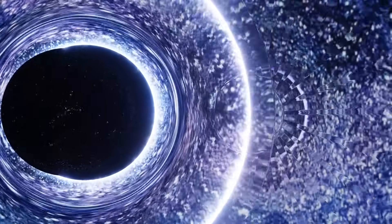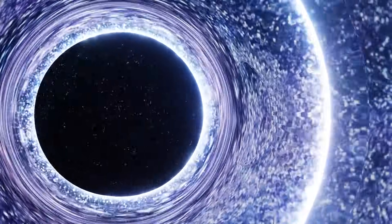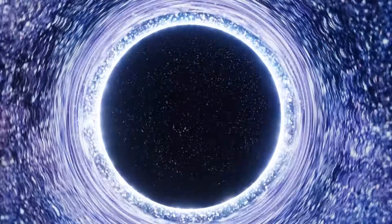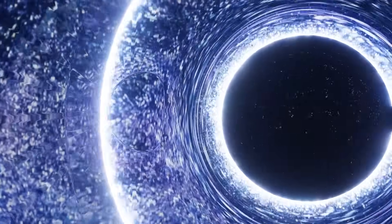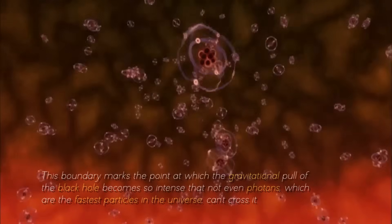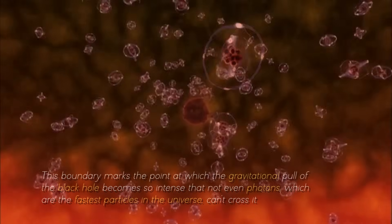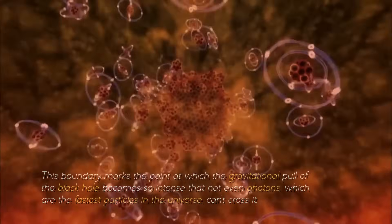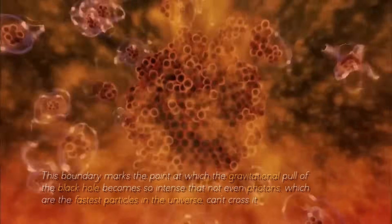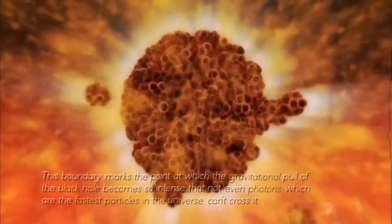A fundamental characteristic of a black hole is its event horizon, an invisible boundary beyond which escape becomes impossible, even for light. This boundary marks the point at which the gravitational pull of the black hole becomes so intense that not even photons, which are the fastest particles in the universe, can cross it.